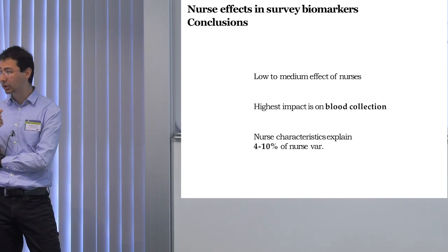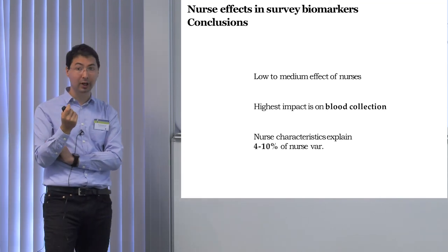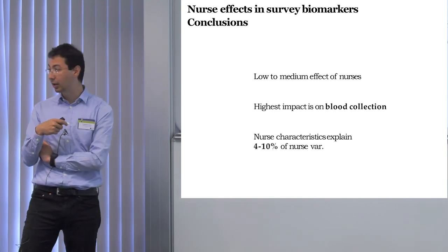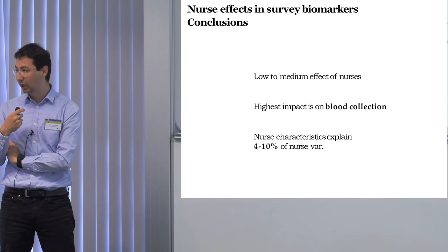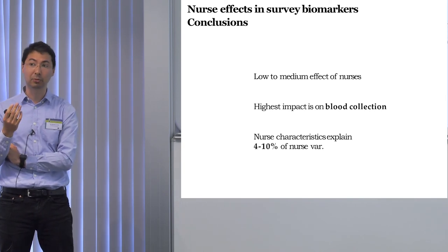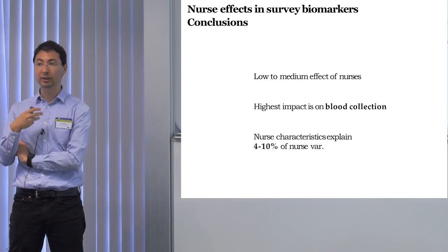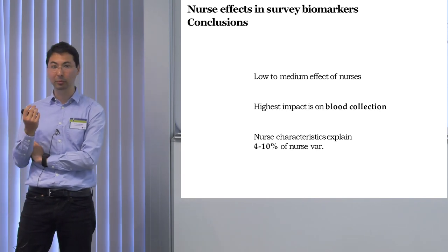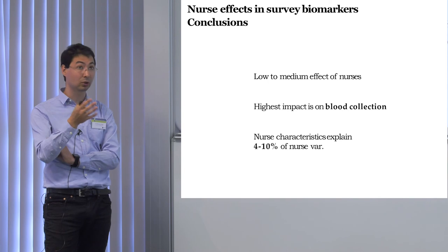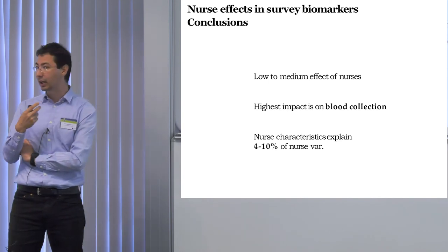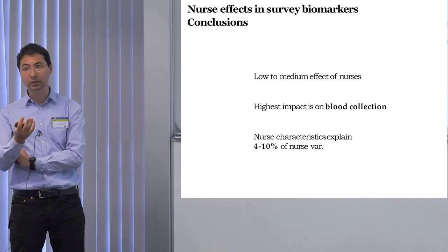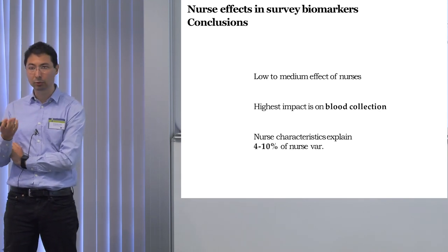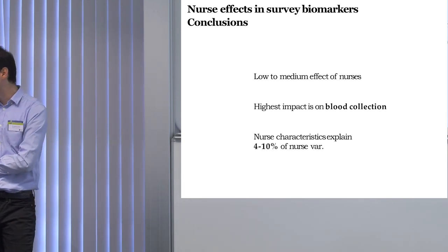Nurse characteristics explain only a small part of the variation — between 4 and 10% of the nurse variation. Clearly there are other things happening that we don't know about. It would be interesting to do a survey of nurses or get more information to understand what's really causing these differences. I think that would be useful both for correction and for improving training or improving data collection.